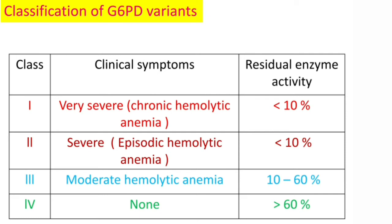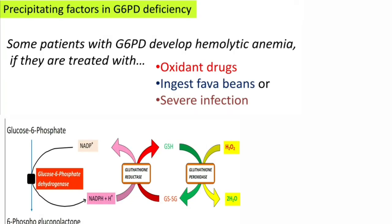Class 3 variants show moderate hemolytic anemia, with residual enzyme activity in the range of 10 to 60 percent of normal. Class 4 variants show no clinical symptoms because the residual enzyme activity is greater than 60 percent, which is essentially normal. This completes the classification of G6PD variants.